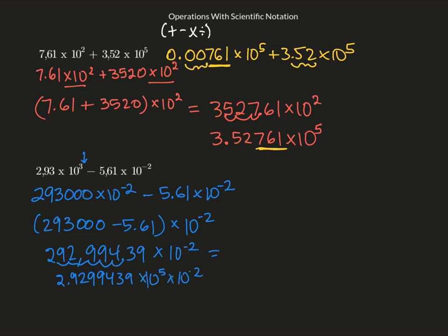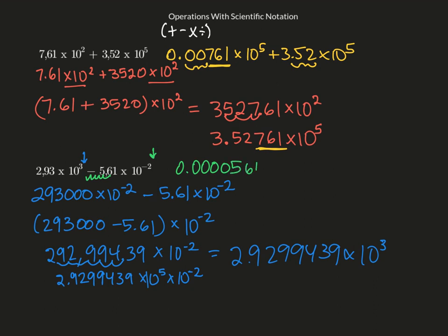Times 10 to the negative 2. Adding those exponents gives 2.9299439 times 10 to the third. Alternatively, I could have changed the negative 2 to a positive 3 by moving the decimal five places, rewriting as 0.0000561 times 10 to the third, then subtracting. I checked it on my calculator and got the same answer.